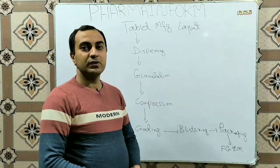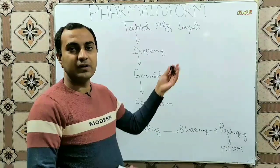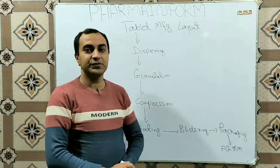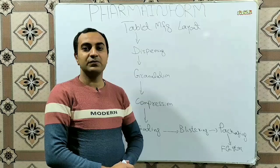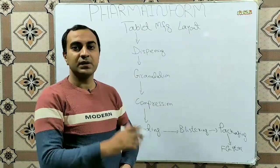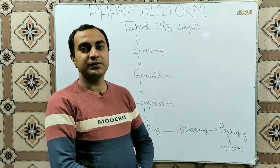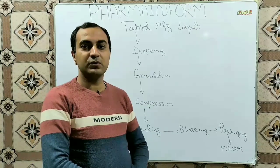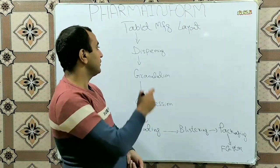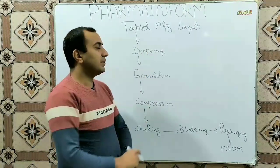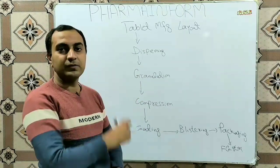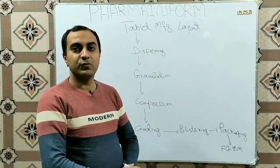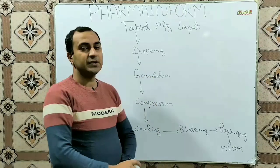Tablet manufacturing layout — the first step is dispensing. First of all, all the equipment and APIs are dispensed in raw material storage according to the dispensing procedure. After dispensing, all the dispensed materials are moved to the granulation area.